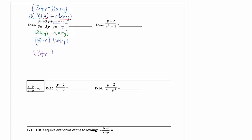Now rewrite the full factored form. We have (3 + r)(x + y) over (5 − r)(x + y). This is the only step where you can cancel — I see people trying to cancel in the middle step before they've finished. It has to be a product before you can cancel; it must be multiplication. The (x + y) factors cancel, and the answer is (3 + r) over (5 − r).